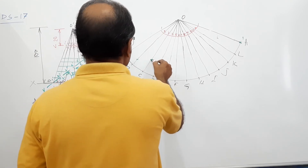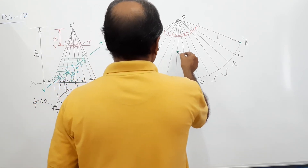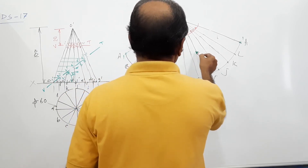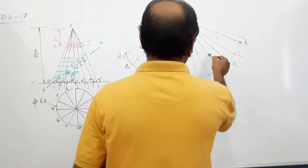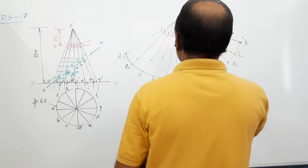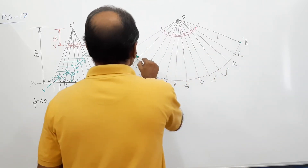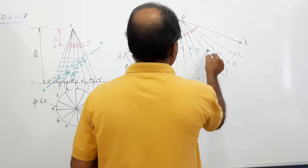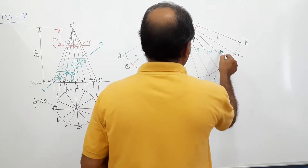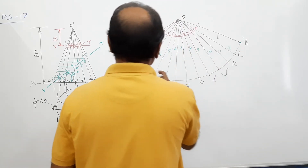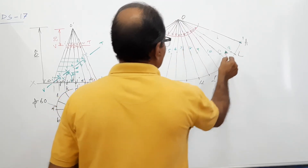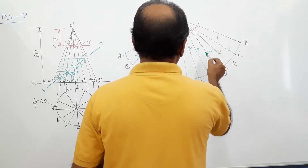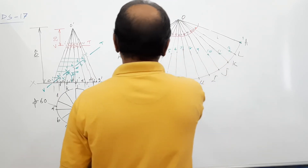Take those distances and mark on the respective generator to get points 2, 3, 4, 5, 6, 7, 8, 9, 10, 11, 12, 1. Connect them by a smooth curve.